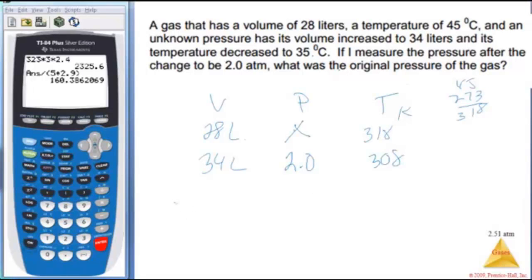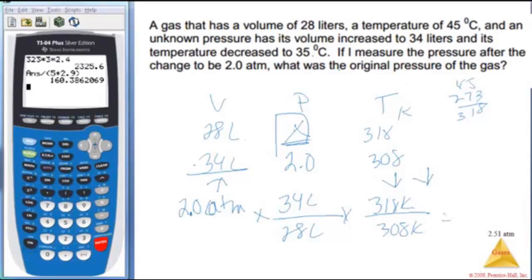So I'm trying to figure out what happens to pressure, or what happened to pressure. Where did it start? So if my volume went up, that would make my pressure go down, which means I would start with a higher pressure. So I want a factor to make this go up, 34 liters over 28 liters. Now, my temperature went down, which would make my pressure go down, so I also want a factor to make this go up, because I must have started with a higher pressure. So it'd be 318 K over 308 K.